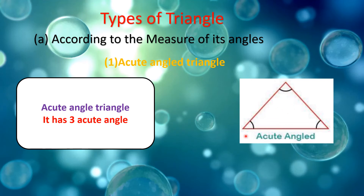Each angle is less than 90 degrees — angle one, two, three. Each angle is less than 90 degrees. For example: 40 degrees, 50 degrees, 60 degrees. An acute-angled triangle has three acute angles, each angle less than 90 degrees.